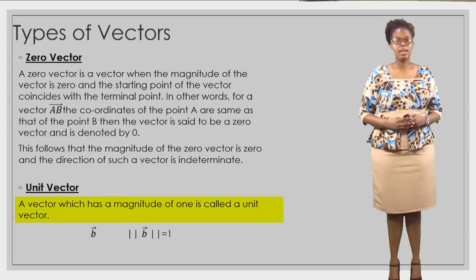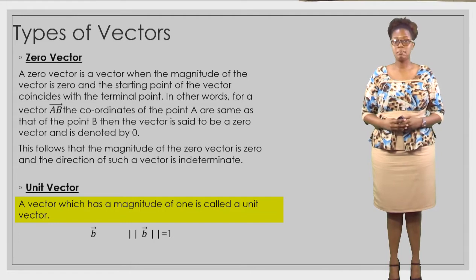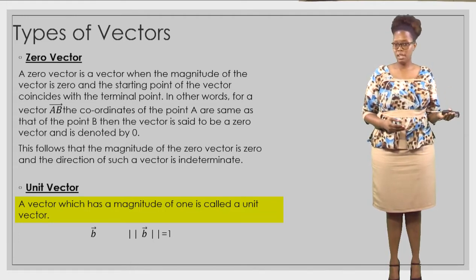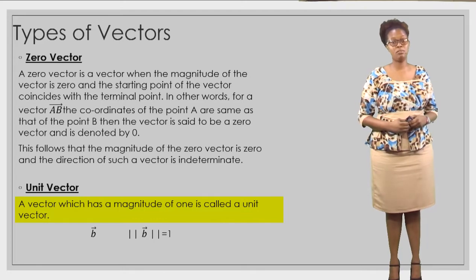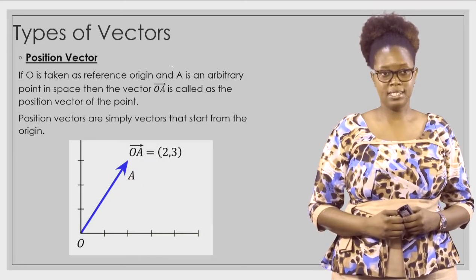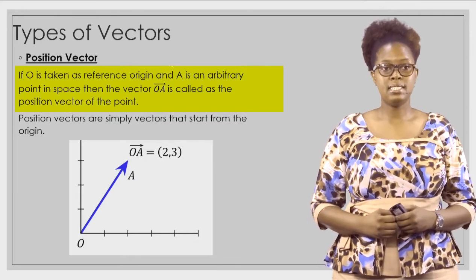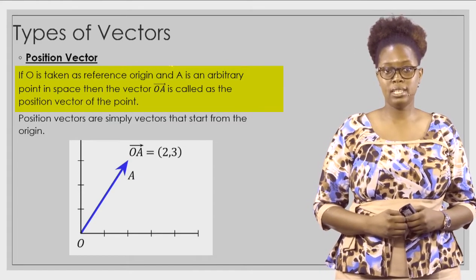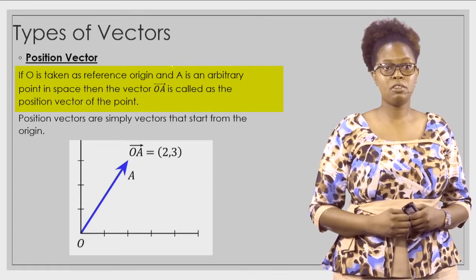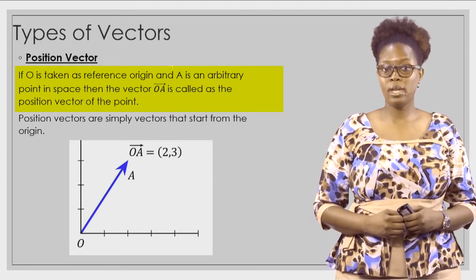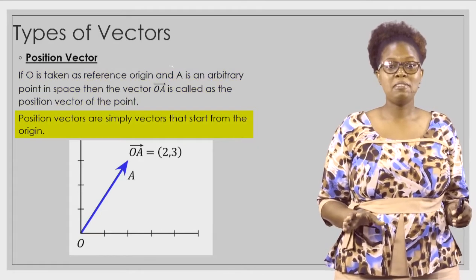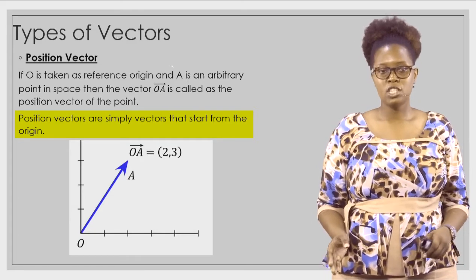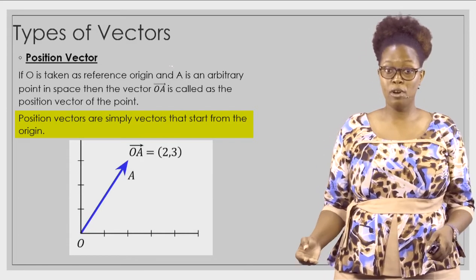A unit vector is a vector which has a magnitude of one. So zero vectors have a magnitude of zero and unit vectors have a magnitude of one. Position vectors: if the origin O is taken as reference and A is an arbitrary point in space, then the vector OA is called the position vector of the point — any vector that starts from the origin is considered a position vector.